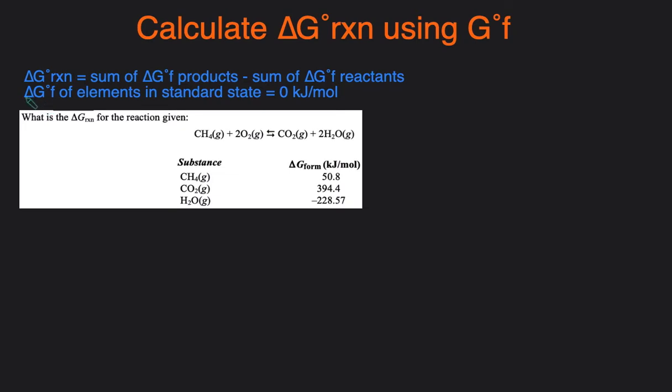Another key concept to remember is that the delta G formation value of any element in the standard state will be 0 kJ per mole, just like it is with the delta H formation of any element in the standard state.